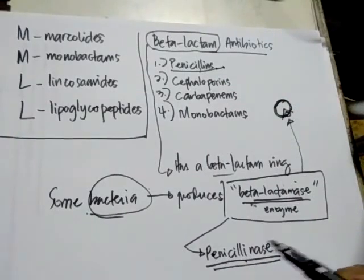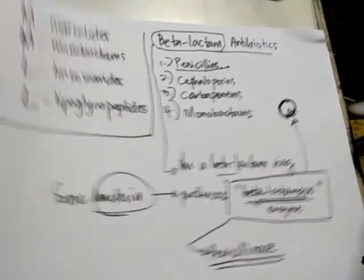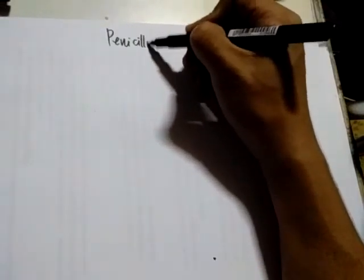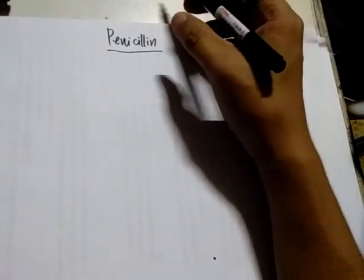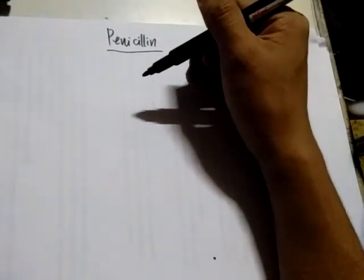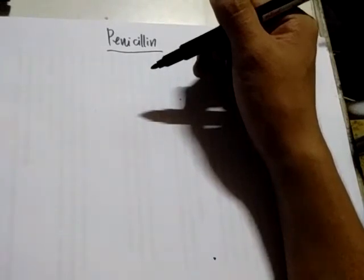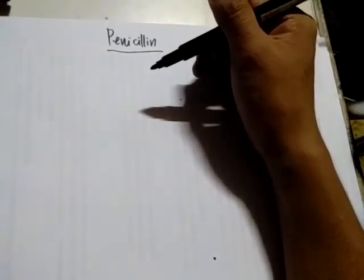Now let's study the penicillins. Penicillin was discovered long ago by Alexander Fleming. It came from the fungus Penicillium notatum. As Fleming himself said: 'I did not invent penicillin — nature did. I only discovered it by accident.'